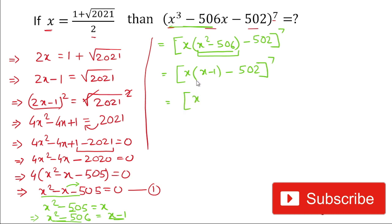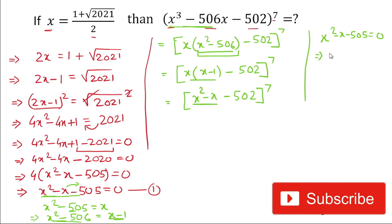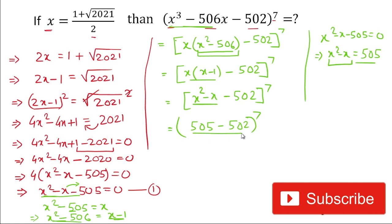This simplifies to x times (x squared minus x minus 502), all raised to the power 7. From Equation 1, x squared minus x equals 505. So substituting, we get x times (505 minus 502) raised to the power 7. This gives x times 3 raised to the power 7. Wait — simplifying, that becomes 505 minus 502 equals 3, so the result is 3 raised to the power 7.